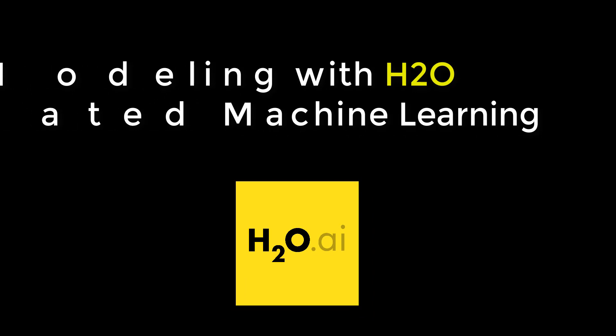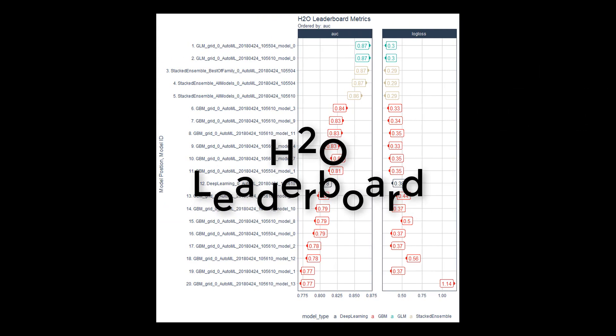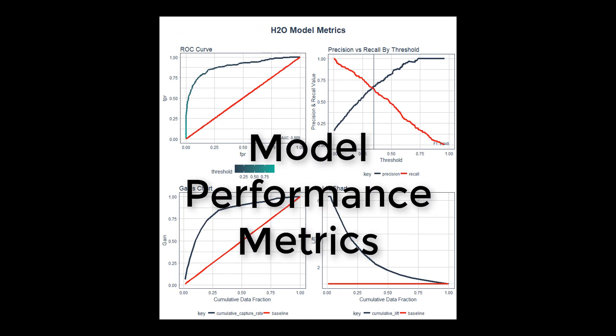Then, we model the attrition using H2O automated machine learning. A number of high-accuracy models are generated and we show you how to assess performance and visualize model quality in a way that executives can understand.